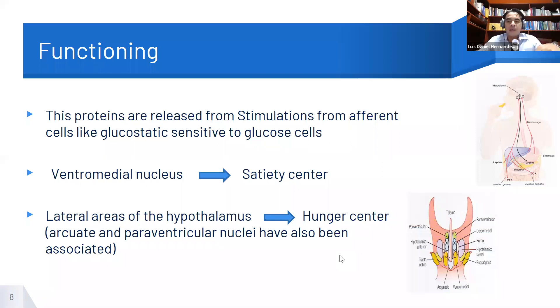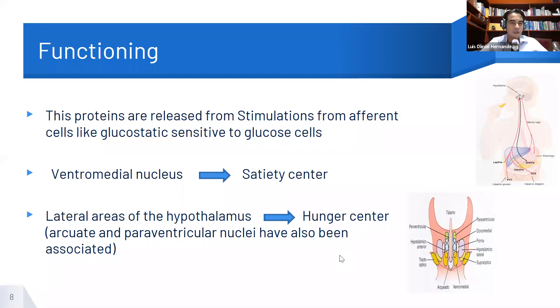In addition, the brain can change the metabolic activity to favor the consumption or storage of lipids and regulate the metabolism of glucose and proteins.